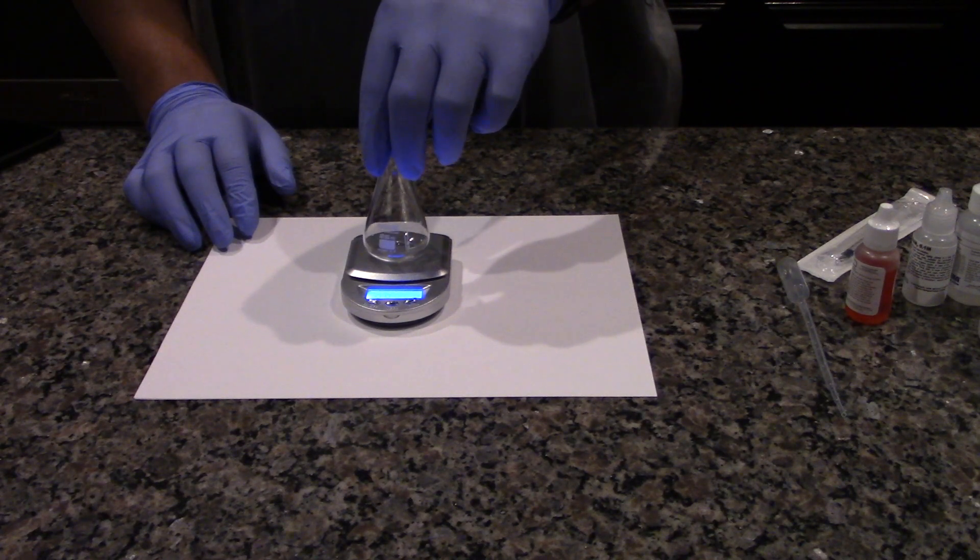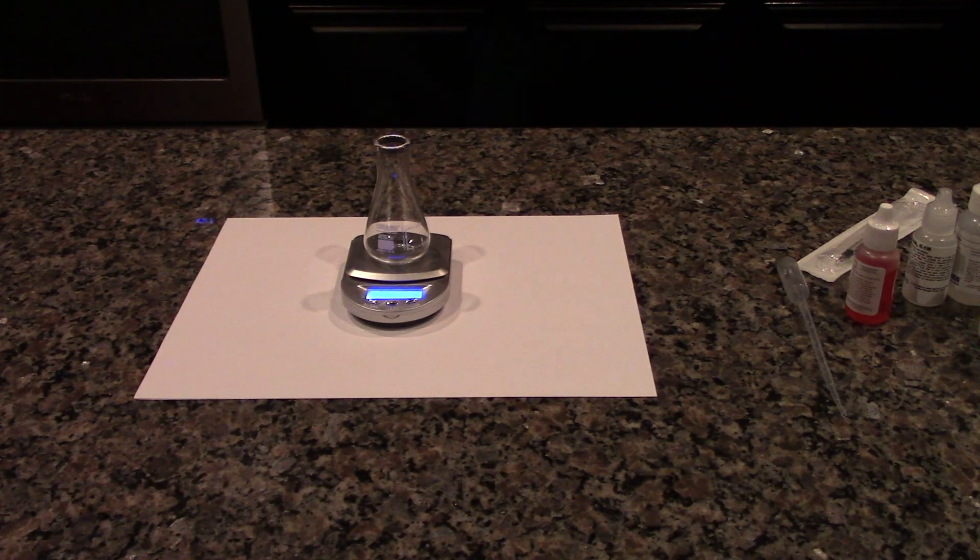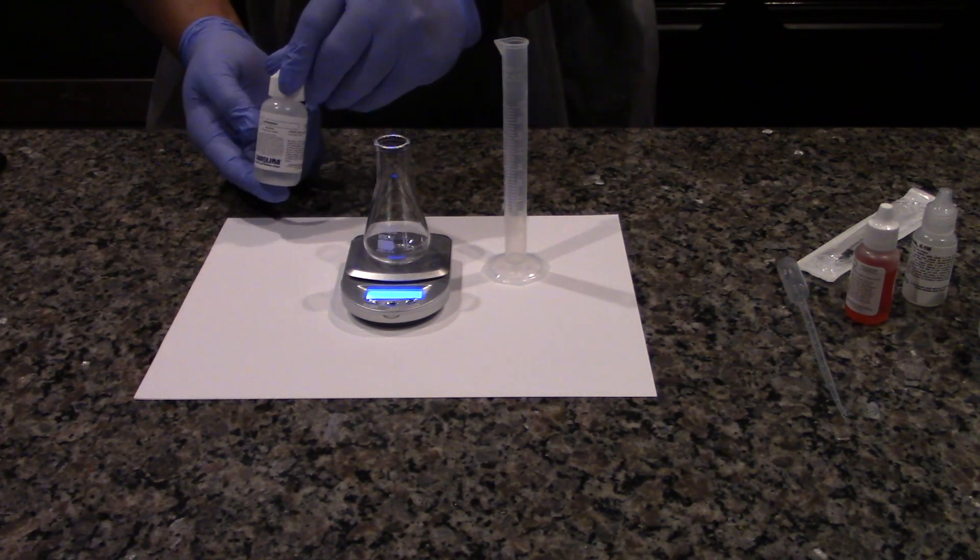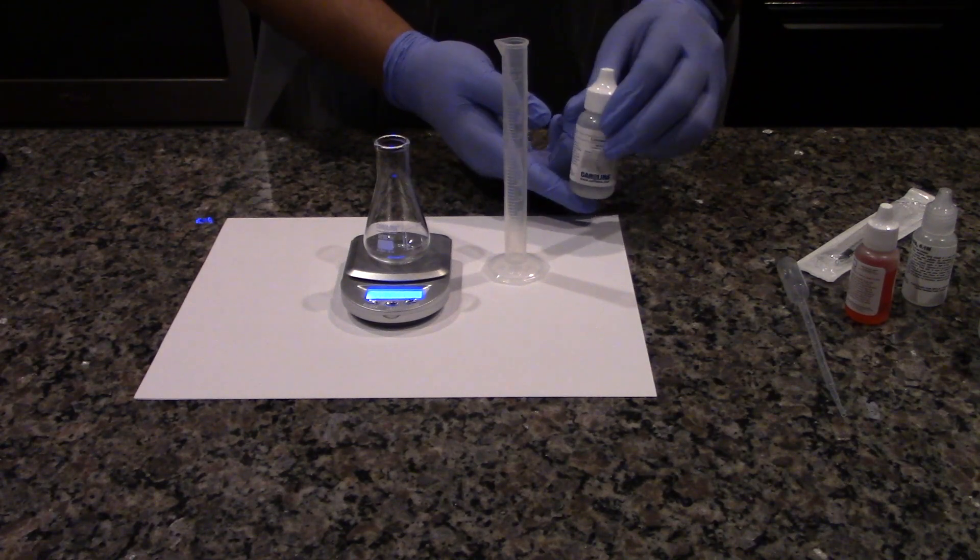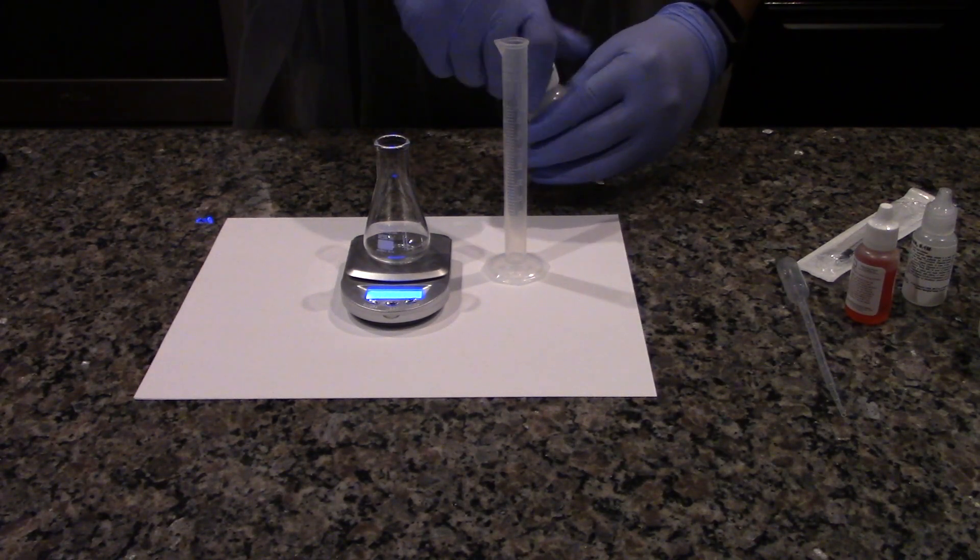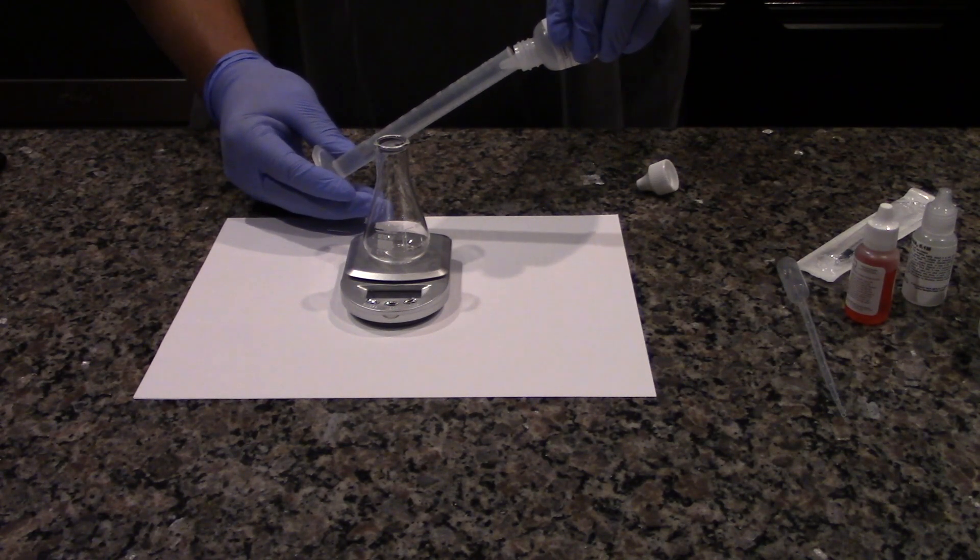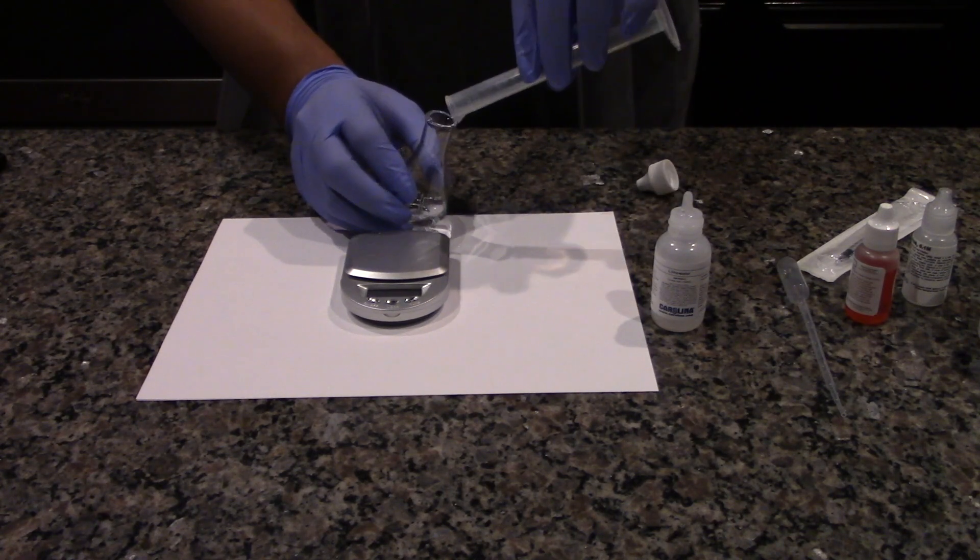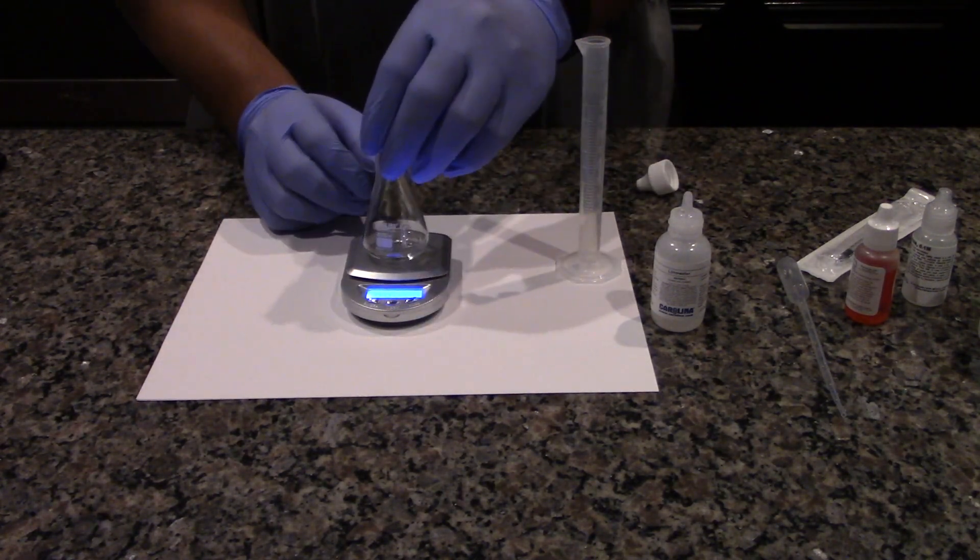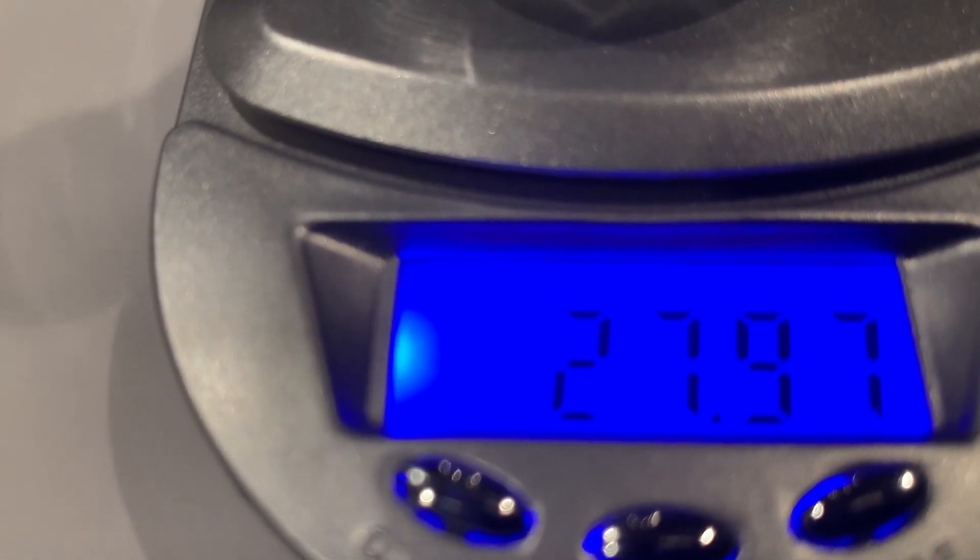Place the 25 milliliter flask on the balance and record the mass in the data table. Measure 3 milliliters of lime water with the 10 milliliter graduated cylinder. Pour the lime water into the flask. Record the exact mass of the flask with the lime water.